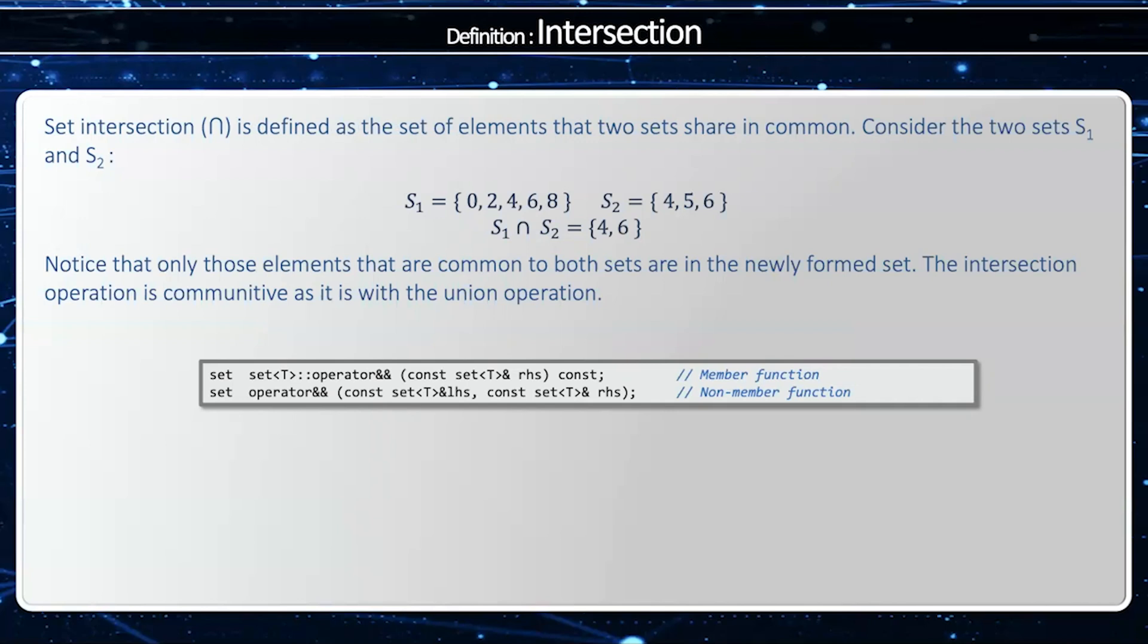And we represent that with the and operator. And so the member implementation is going to have this as a left-hand side, and so I just pass the right-hand side. And the non-member variation is going to pass both the left-hand side and the right-hand side. And both of these will return a new set.